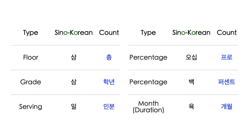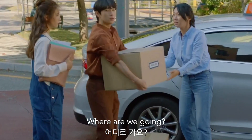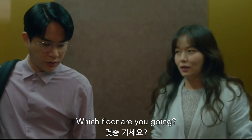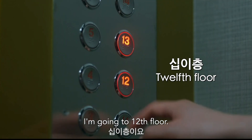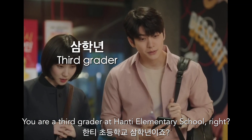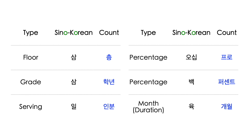Listed here are examples of counters used with Sino-Korean numbers. Floor is 층: 삼층 means either third floor or three stories depending on context. 학년 is for school grade: 삼학년 means third grade. A serving is 인분: say 일 인분 주세요 to order one serving. Percentage is said two ways: 푸로 or 퍼센트 are both commonly used. Among young people, it's a new trend to shorten 퍼센트 to 퍼.